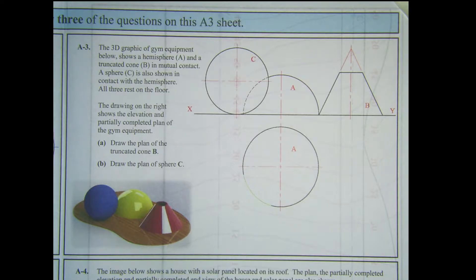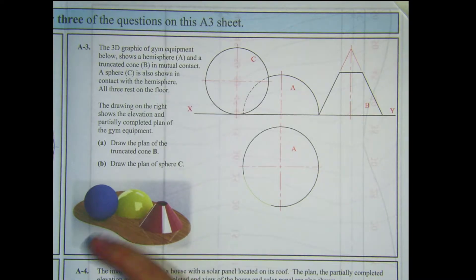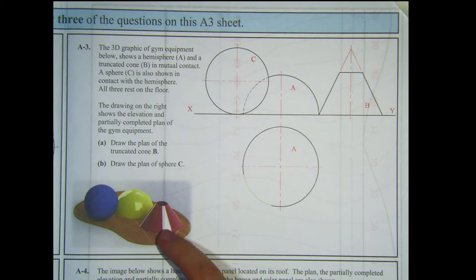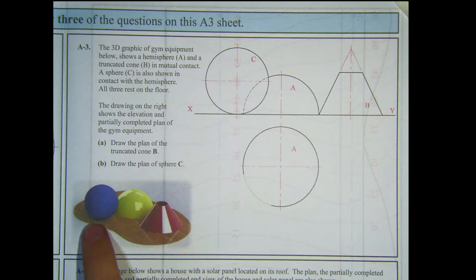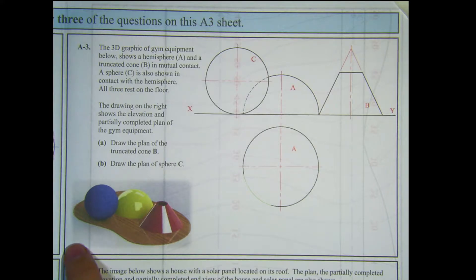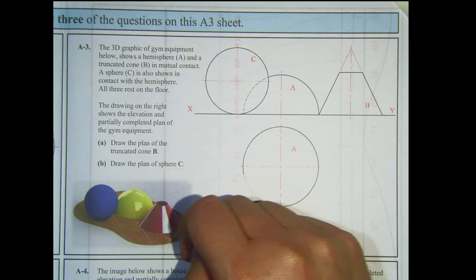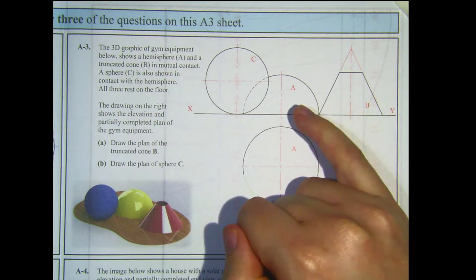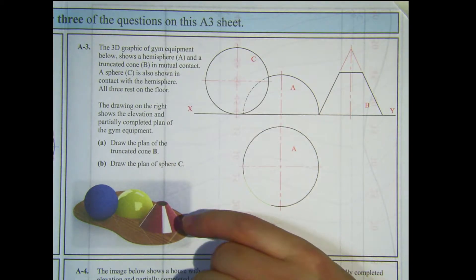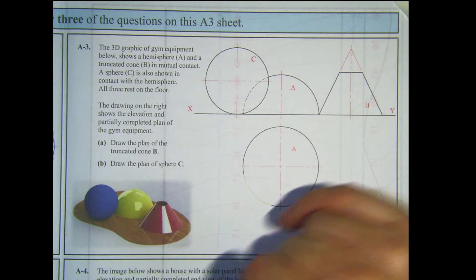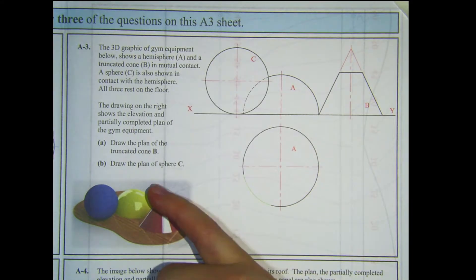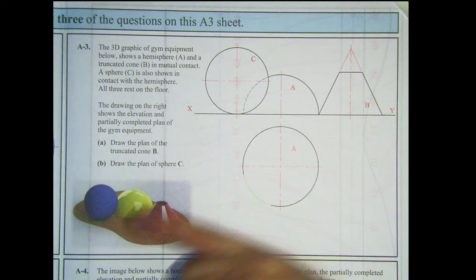Question A3 is looking at solids in contact. The 3D graphic of gym equipment shows a hemisphere (the yellow one), a truncated cone B, in mutual contact. A sphere C is also shown in contact with the hemisphere, and all three rest on the floor. The drawing shows the elevation and partially completed plan. We need to draw the plan of the truncated cone B and the plan of the sphere C.